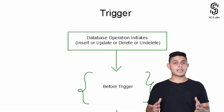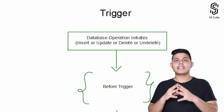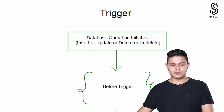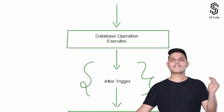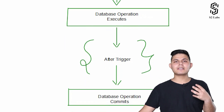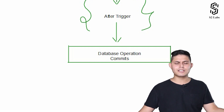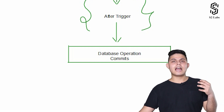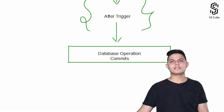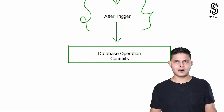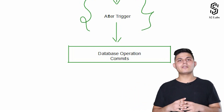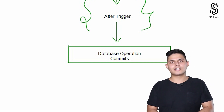To revise: whenever a database operation happens — whenever a change occurs to Salesforce records — the trigger gets executed. First, the before trigger executes; after successful execution of the before trigger, the database operation runs; after the database operation completes, the after trigger executes; and after the after trigger completes successfully, the database operation is committed. I hope that helps you understand what Apex Triggers are and how before and after triggers differ, and how they can help you implement solutions to problems you'll face as a Salesforce developer.